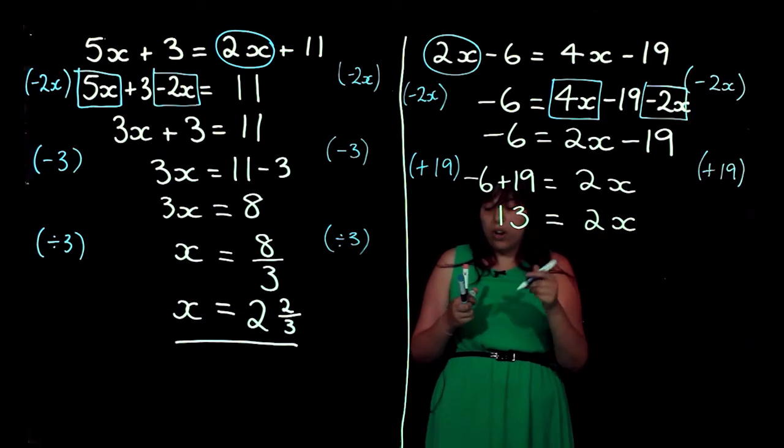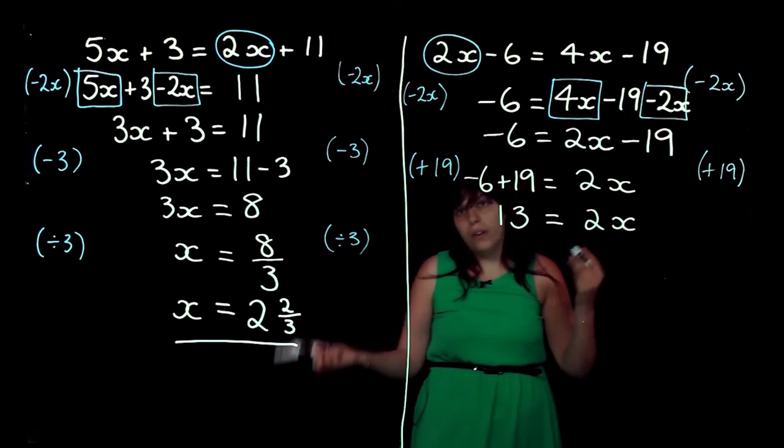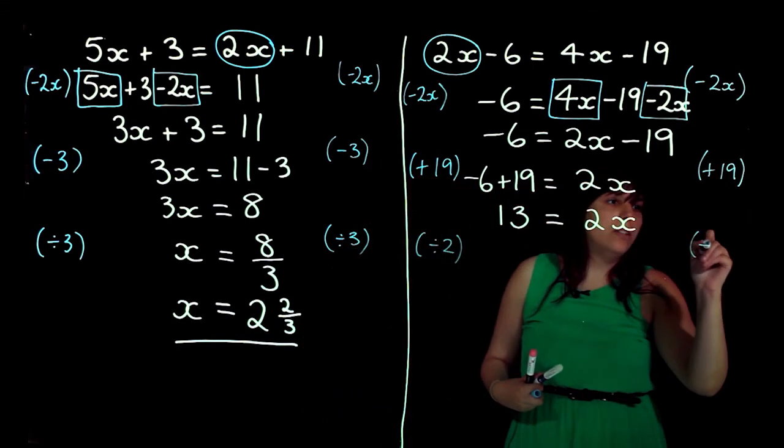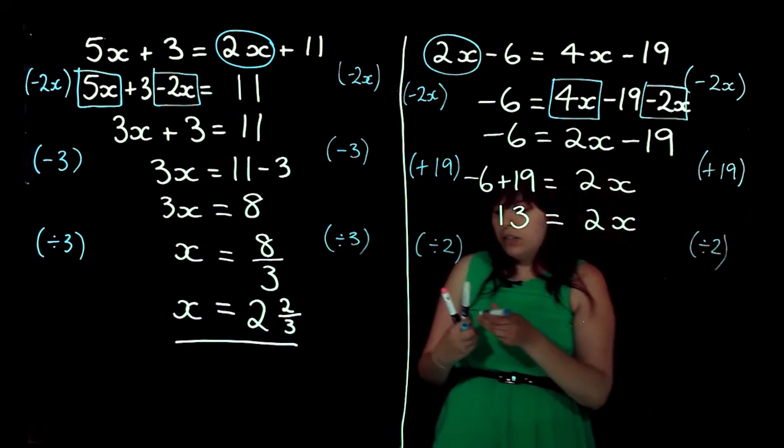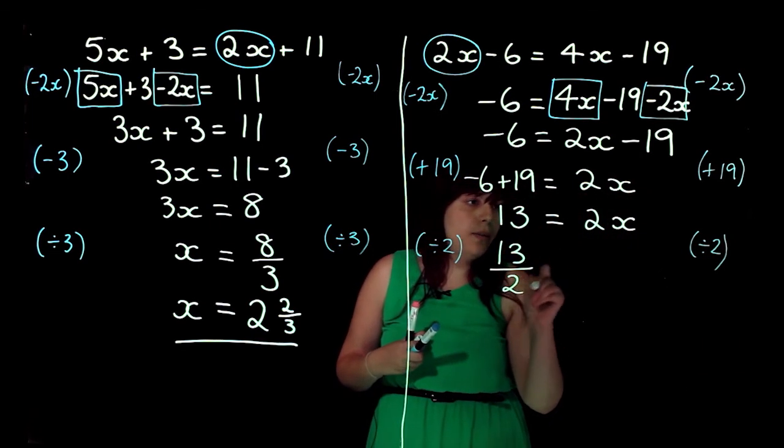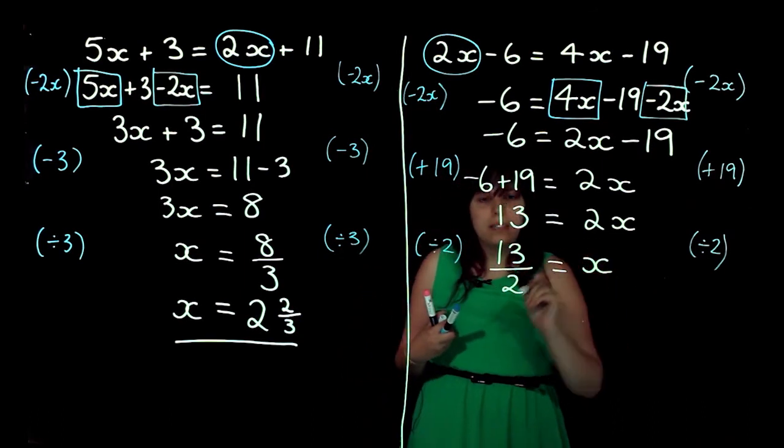Now, I've got 2 times x. So, I want to get rid of that times 2. How can I get rid of times 2? Divide by 2. And do that to both sides. So, I've got 13 divided by 2 equals... 2x divided by 2 is just going to be 1x. So, just x.